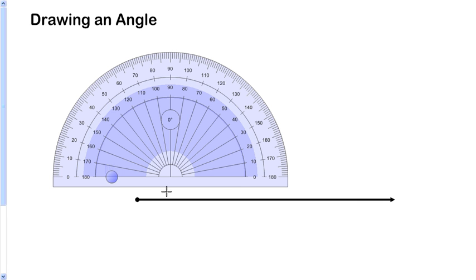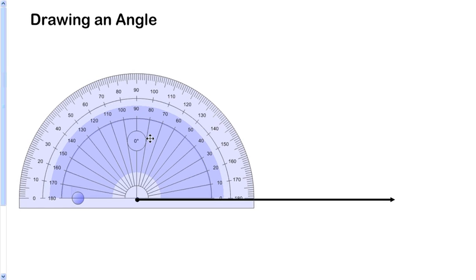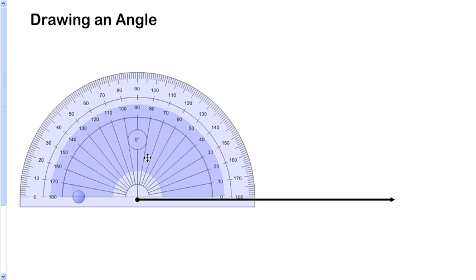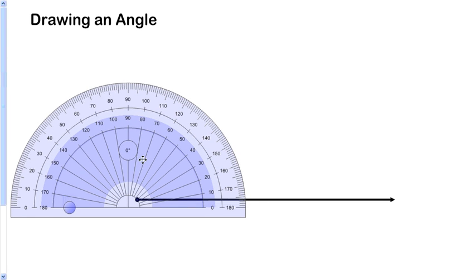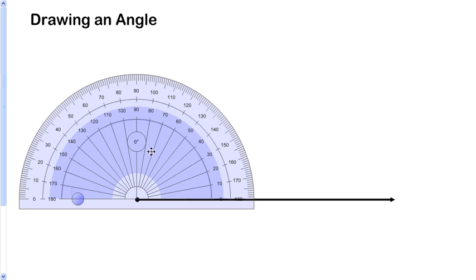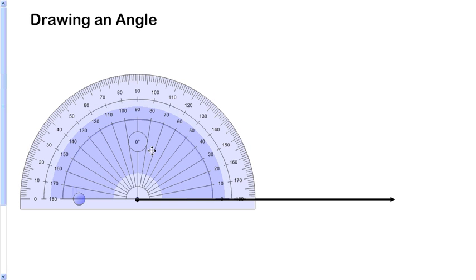Then from the vertex you're going to draw another ray. Do you want to just do it freehand? Sure you could do that. But what if you want to be specific? You put your protractor on the bottom right there, line what will be the vertex up with the center of the protractor.